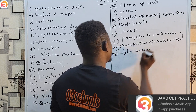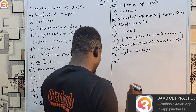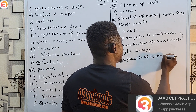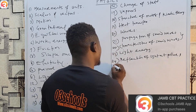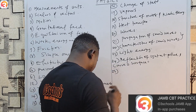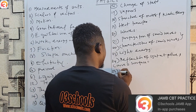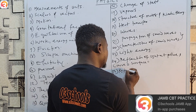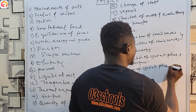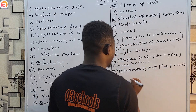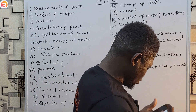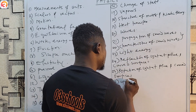The twenty-third topic is light energy. The twenty-fourth topic is reflection of light at plane and curved surfaces. The twenty-fifth topic is refraction of light at plane and curved surfaces. The twenty-sixth topic is optical instruments.